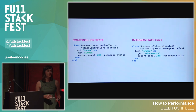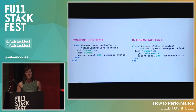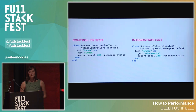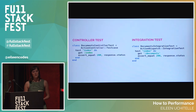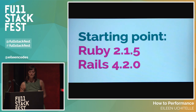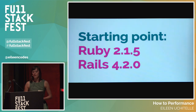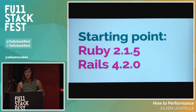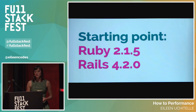Controller tests and integration tests don't look that different. Both define the test, process a route, and assert something about the response. Here the index tests for both are getting the index and asserting the response was a success. To build a baseline, I started with Ruby 2.1.5 and Rails 4.2.0 because that's what Basecamp was using at the time. I wanted to be sure integration tests were slow in isolation using the same technology as Basecamp.